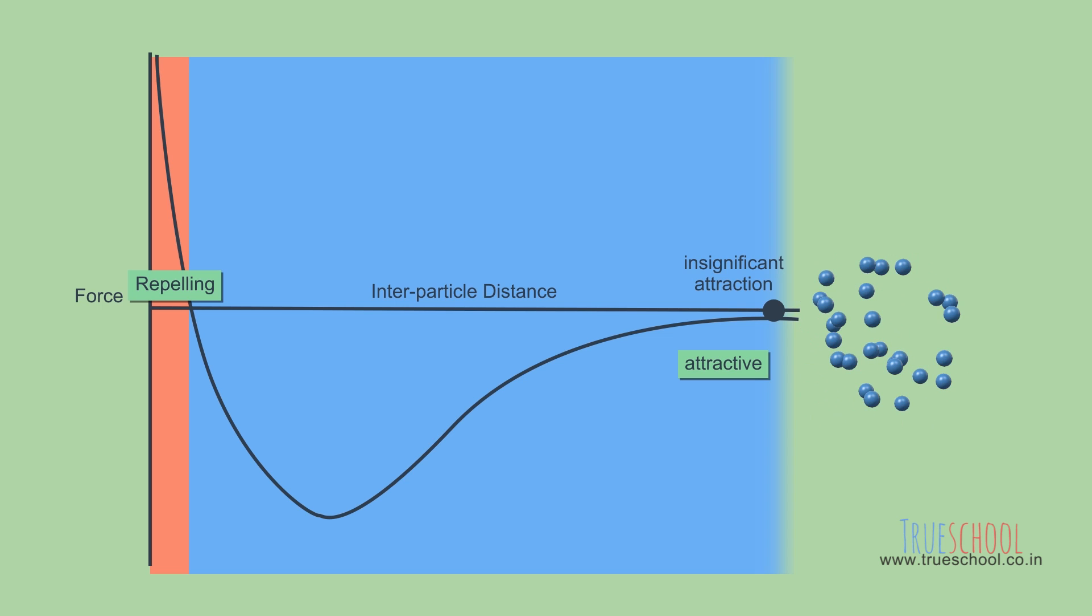But when the temperature of gas becomes very low, even this insignificant attractive force causes the particles to slowly come together and get condensed.